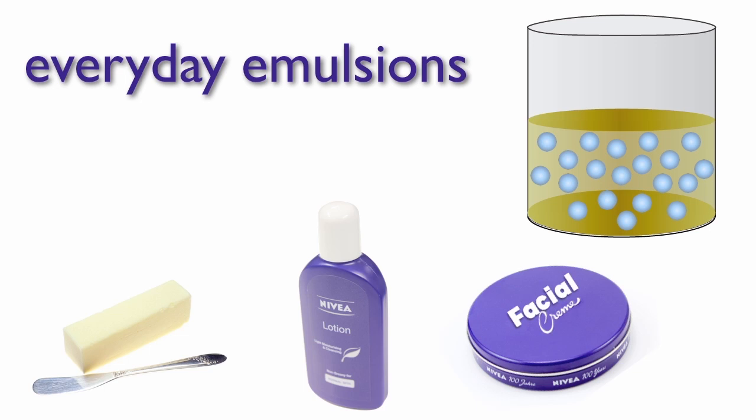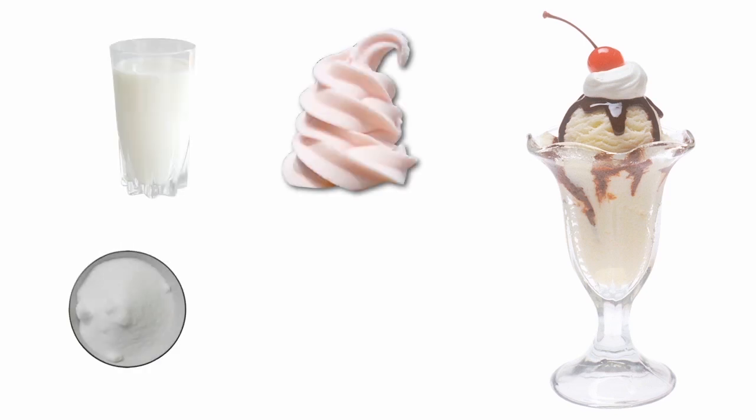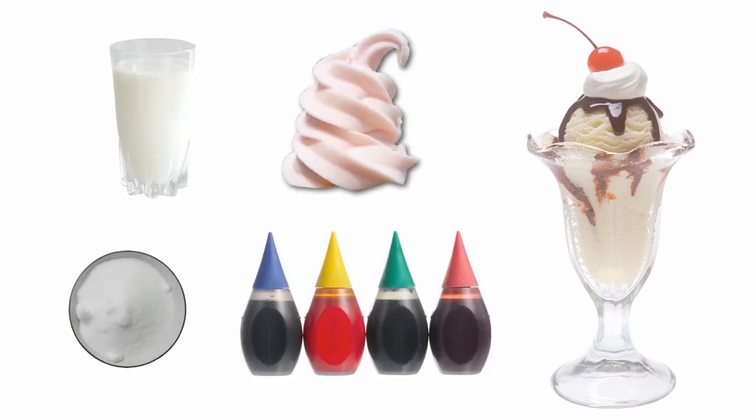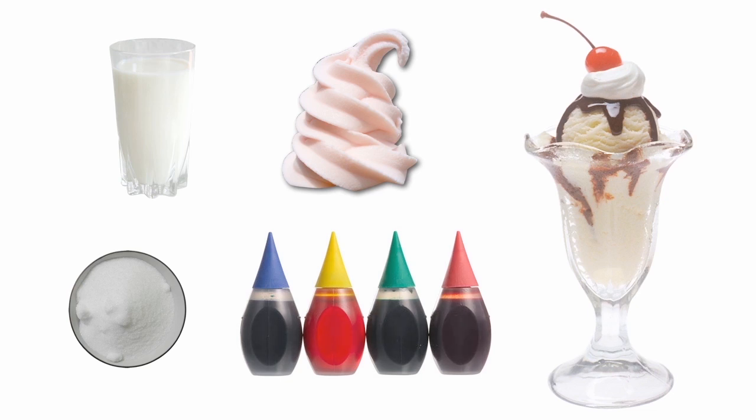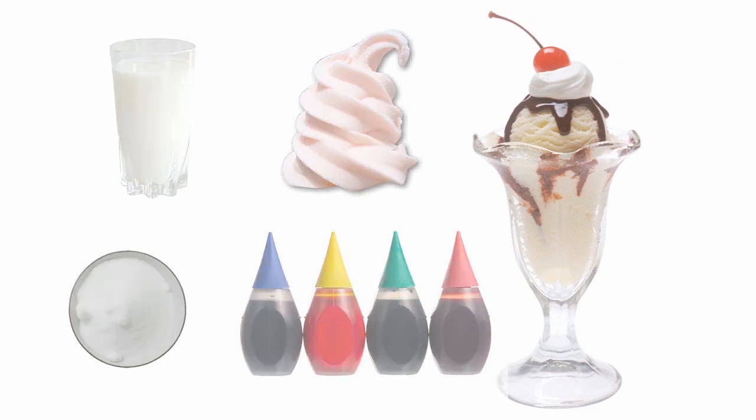The world's most popular emulsion is without a doubt ice cream. The main ingredients are milk or cream and sugar, along with flavoring and coloring components. So what prevents an emulsion such as ice cream from separating? Substances known as emulsifiers are added to stabilize emulsions.